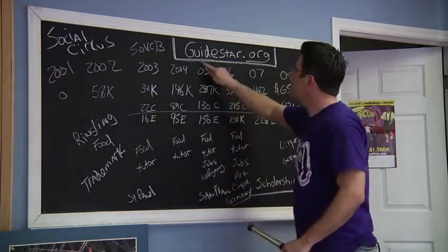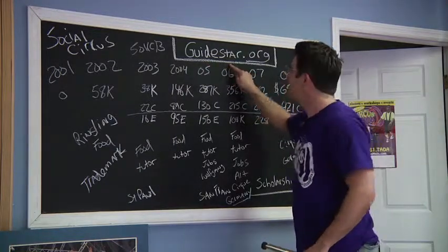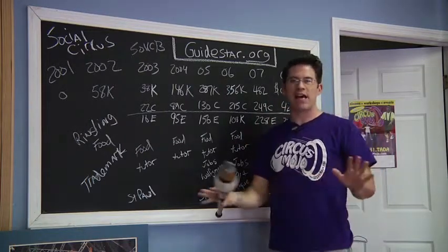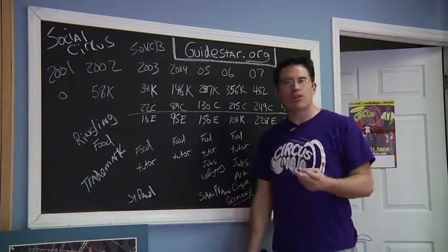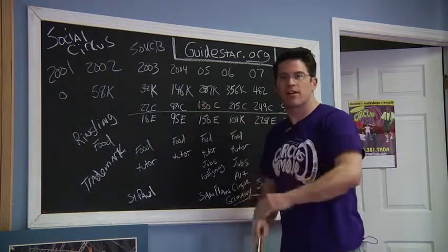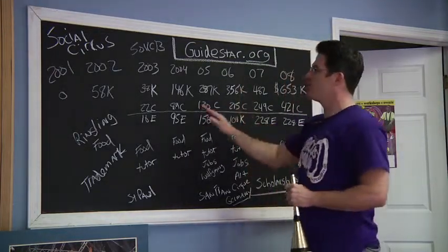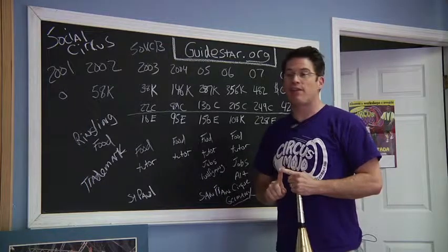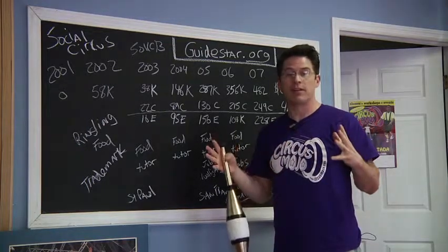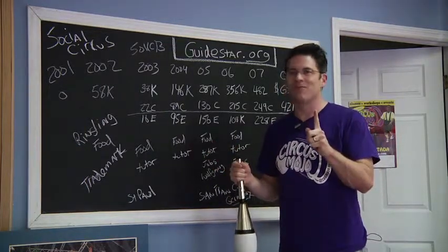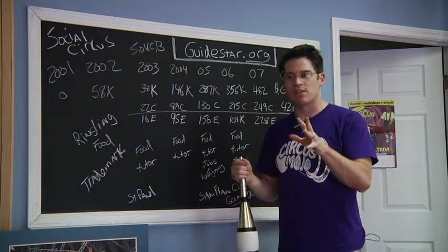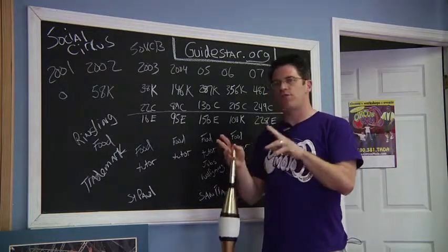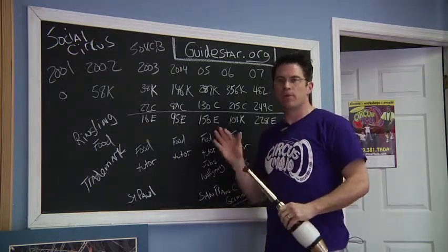If you go to a place called GuideStar, G-U-I-D-E-S-T-A-R.org, you can pull the tax returns of any nonprofit. Boys and Girls Club, American Red Cross, Circus Theme, San Francisco Circus Center. If you go to GuideStar, you can see all this in black and white. How much money was earned? How much money was donated? It's amazing. Nonprofits, they belong to the public. That's why they don't pay taxes. Not one person controls a nonprofit. A board of directors does. Occasionally, they resign when the going gets tough. But that's what happens. Boards of directors, they have a fiduciary responsibility to propel the organization.